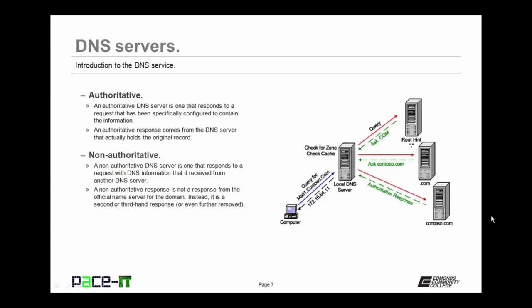A non-authoritative DNS server is one that responds to a request with DNS information it received from another DNS server. A non-authoritative response is not from the official name server for the domain — instead it is a second or third-hand response given back to the requester. In most cases, when we send a DNS request, we get a non-authoritative response back.